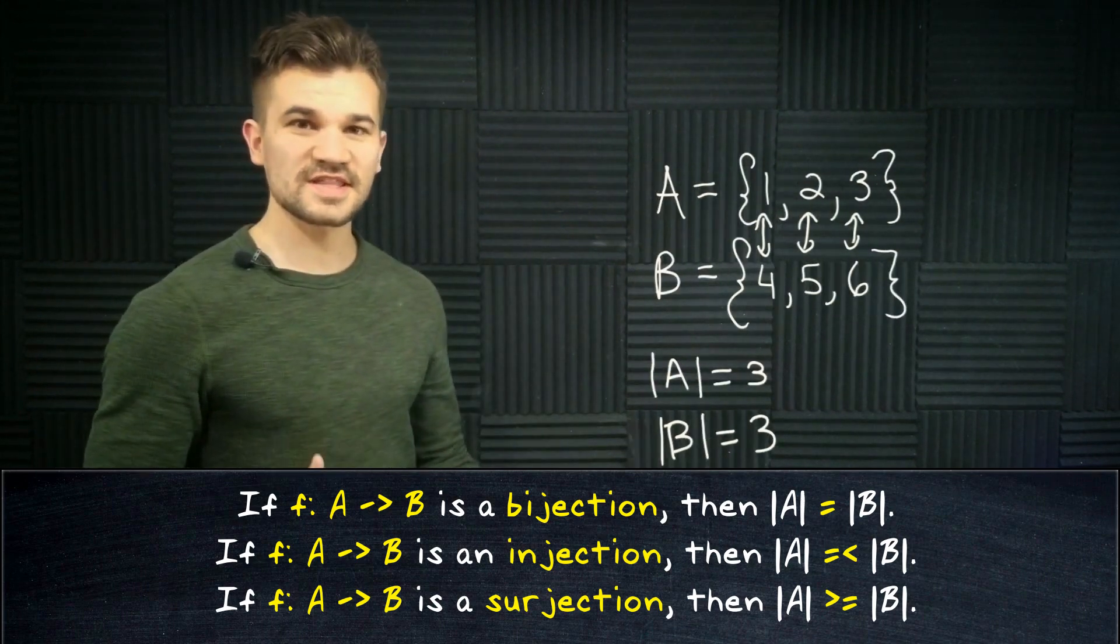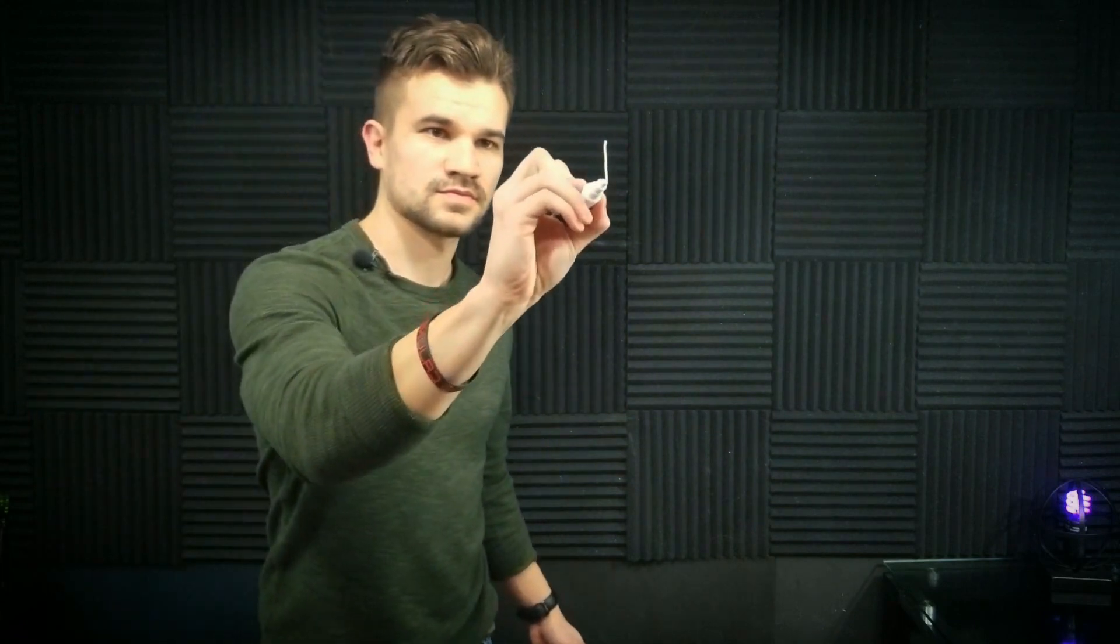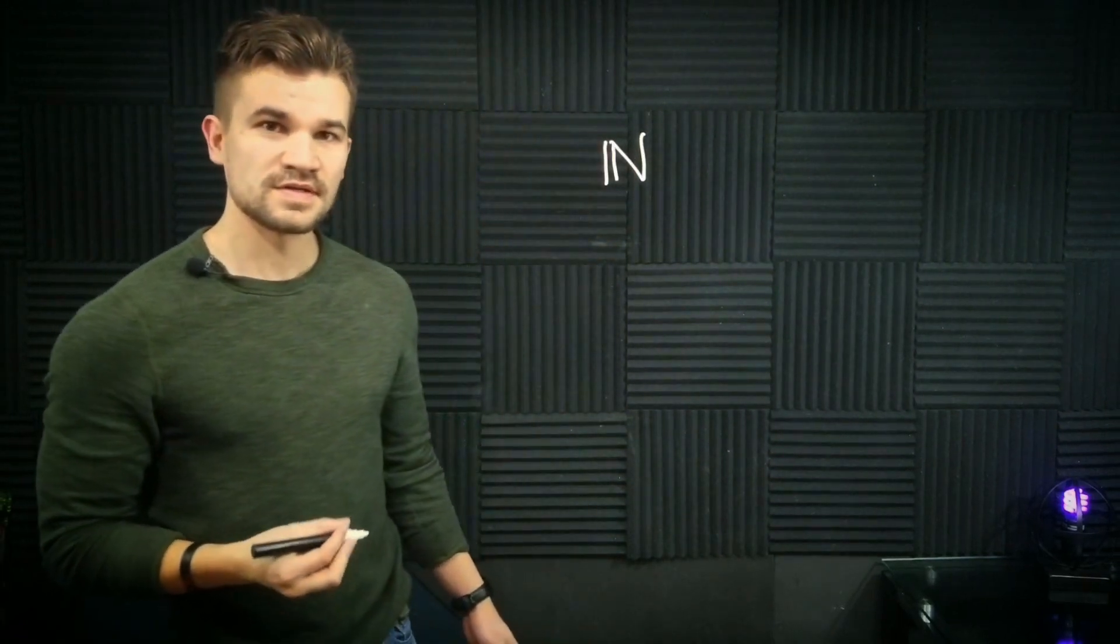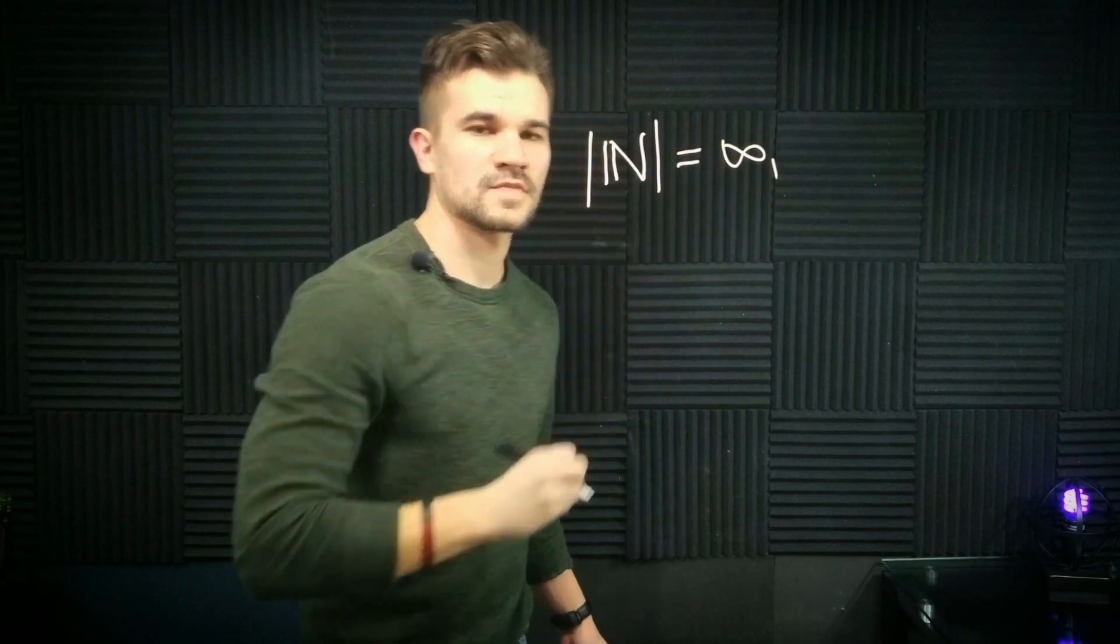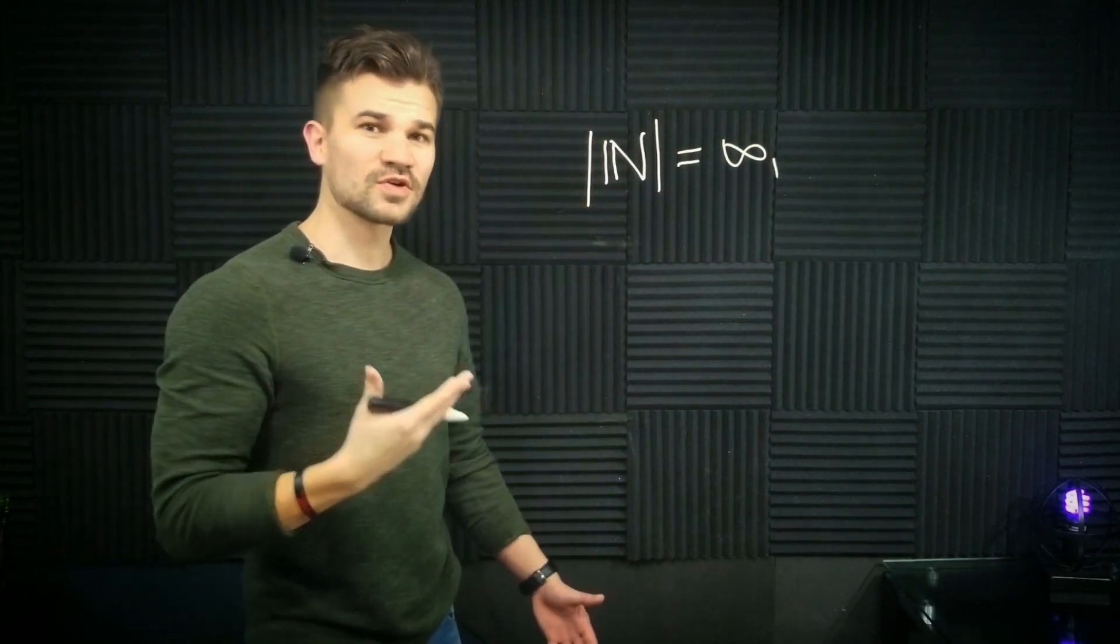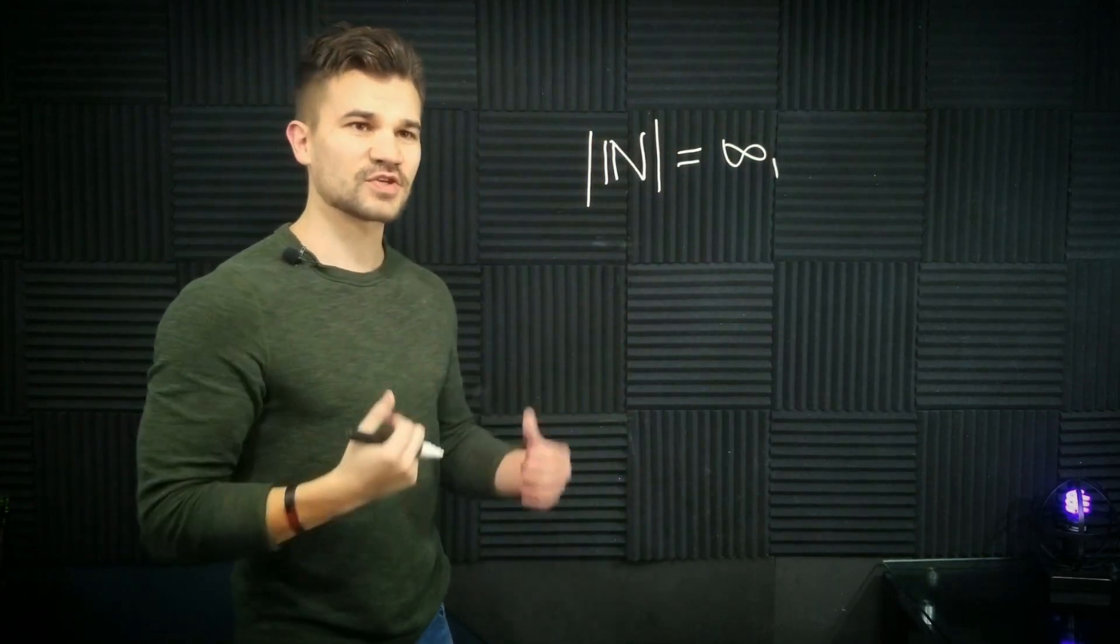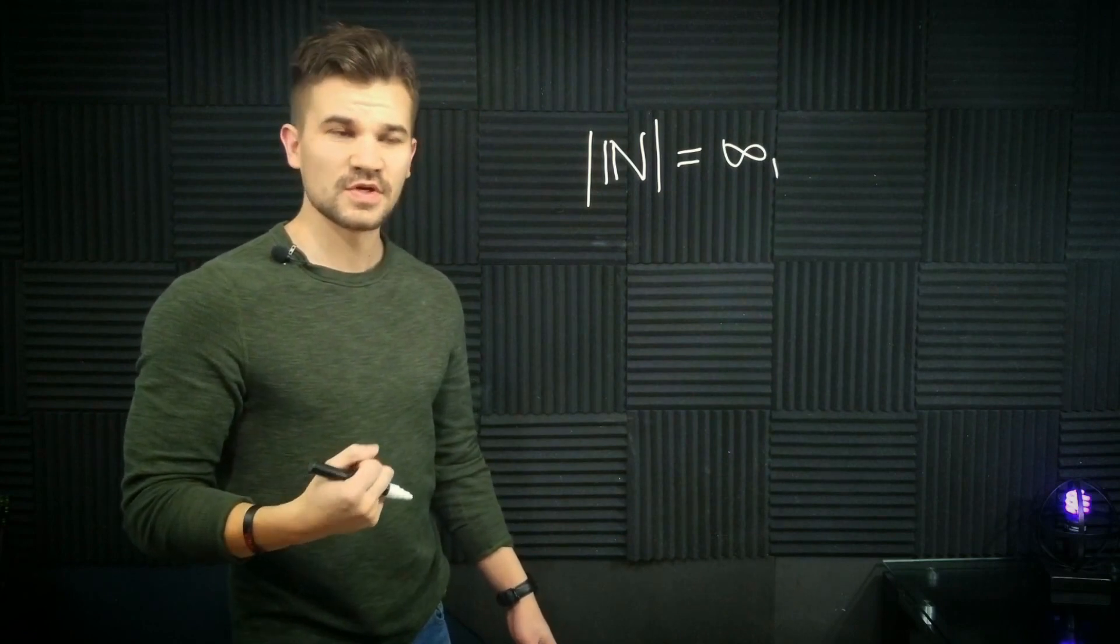So let's start by looking at the most common infinite set, the set of natural numbers. Now the natural numbers is an infinite set. We're going to call that infinity one. Now what's a larger set? What's a set that might have a larger cardinality than the natural numbers? Well, how about the integers?